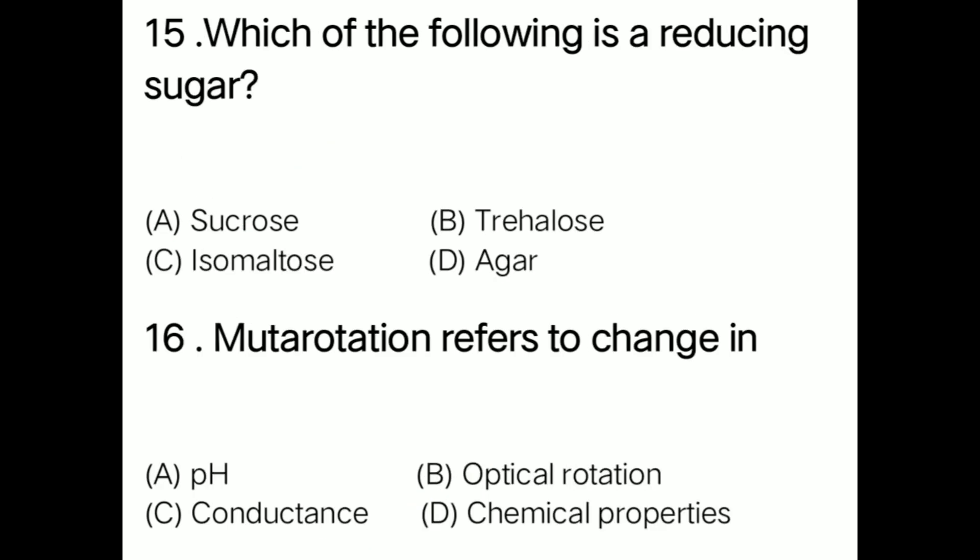Question: Which of the following is a reducing sugar? Option A sucrose, option B trehalose, option C isomaltose, option D agar. Correct answer is option C: isomaltose is a reducing sugar.